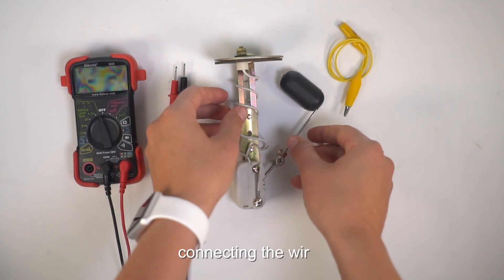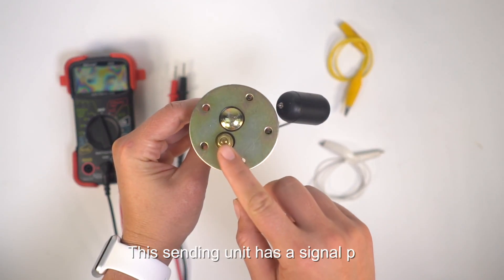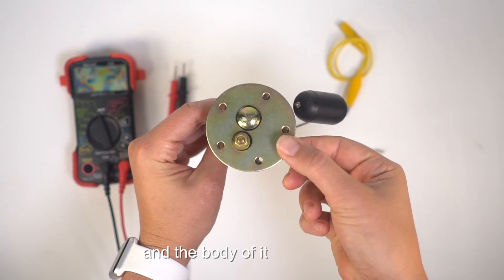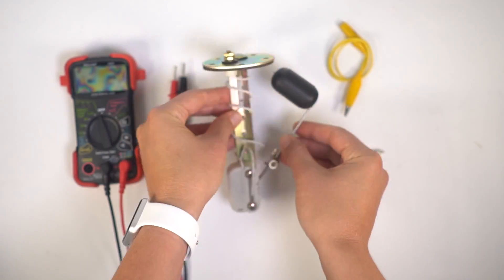Next up, connecting the wires to the sending unit. This sending unit has a signal post, and the body of it is the ground. First,